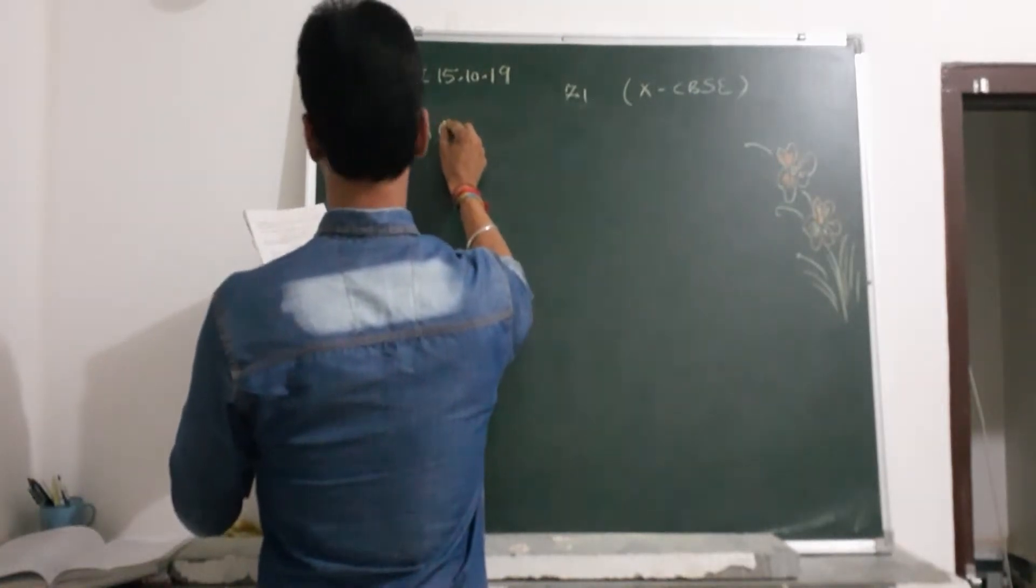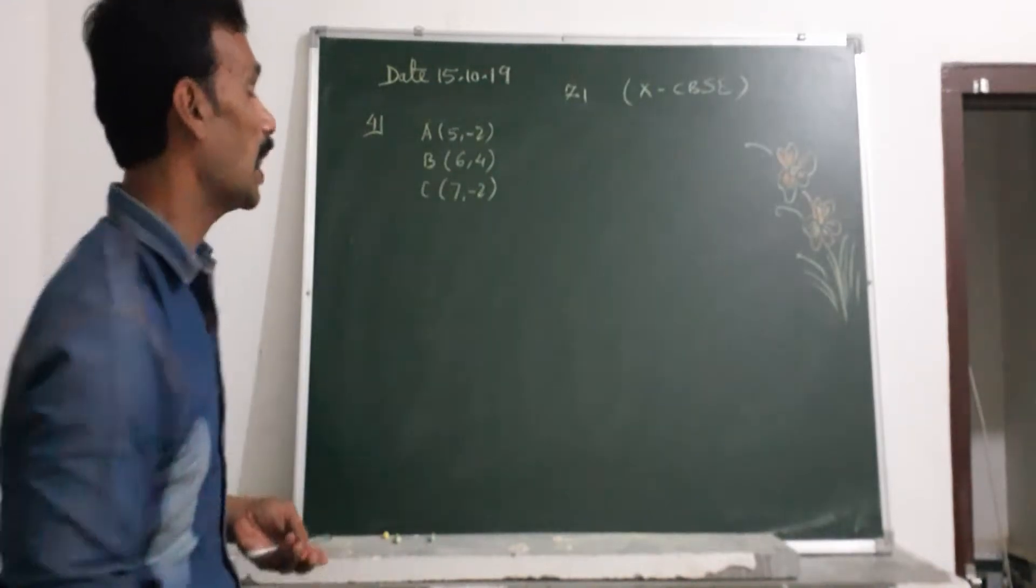The first point A is (5, -2), B is (6, 4), and C is (7, -2). This is question number 3 about an isosceles triangle, which has 2 sides equal.